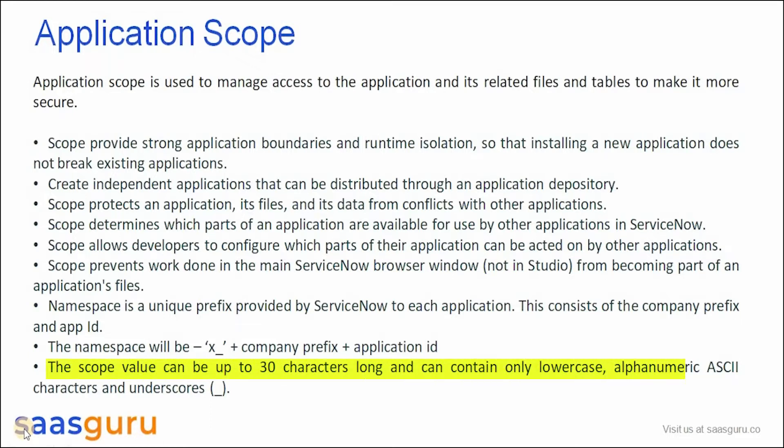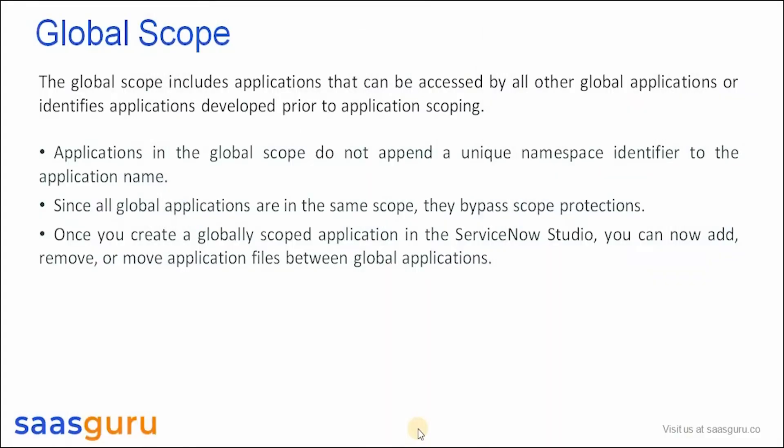The scope value can be up to 30 characters long, and it can only contain lowercase alphanumeric ASCII characters and underscores. Let us now look at Global Scope.